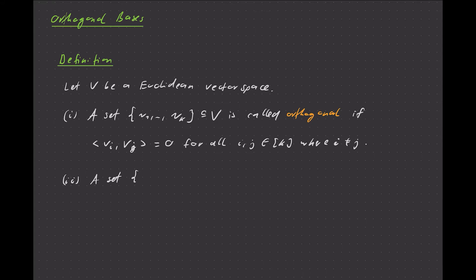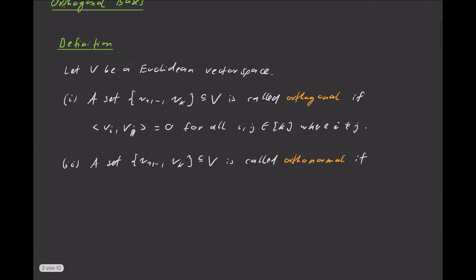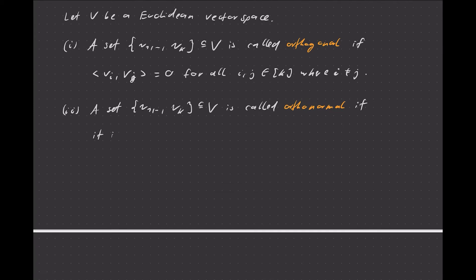So a set of k vectors in V is called orthonormal if it is orthogonal and the norm of all vectors Vi is 1, for all i in 1 to k.